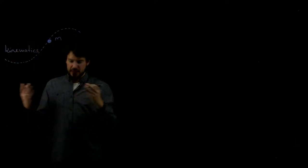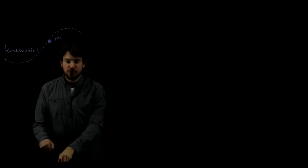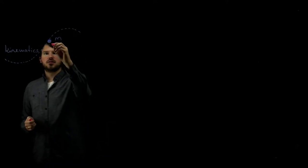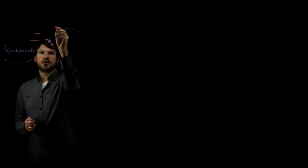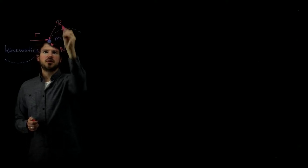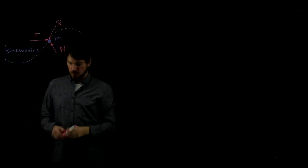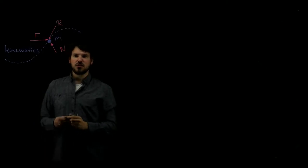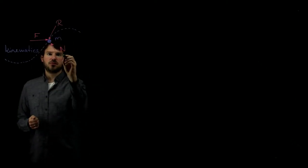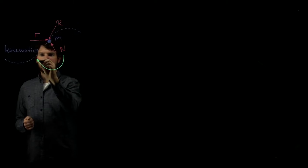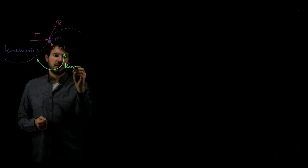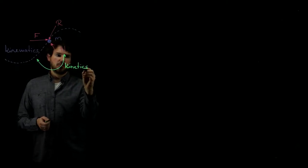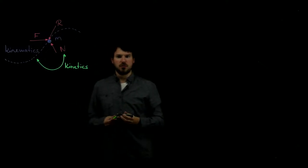As we know from Mechanics 1, there are forces acting on the particle. These can be forces from the ground, some reaction forces, some external forces, some friction forces — all kinds of things acting onto the particle. And if we want to link the forces acting onto the particle with the motion, linking forces with kinematics, that's exactly what we call kinetics: linking motion to those forces and potentially torques that cause the motion.